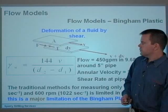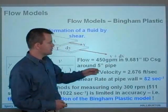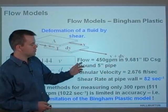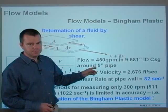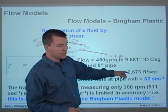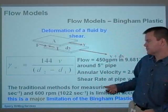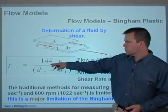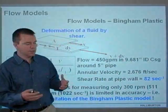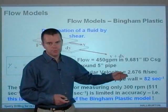Just looking at some actual figures here to show you this. If we're flowing at 450 gallons a minute in a 9.681-inch ID casing around 5-inch OD pipe, the annular velocity in that annulus around that pipe, assuming the pipe is concentric, the average annular velocity would be 2.676 feet per second. So plug in 2.676 feet per second into this equation, which is your shear rate at the wall, or the annular wall, or the pipe wall. So we end up with a shear rate at the pipe wall that ends up being 82 per second.